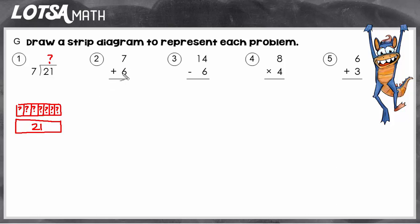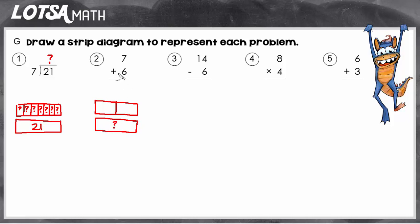So let's look at what an addition strip diagram would look like. In addition, there are always two parts — the two addends and the sum. The sum is always the whole. In this case, we don't know the sum, so the unknown is going to go in the whole, and the two addends are going to go in the parts. So we have 7 and 6 together would make 13, which is the answer.